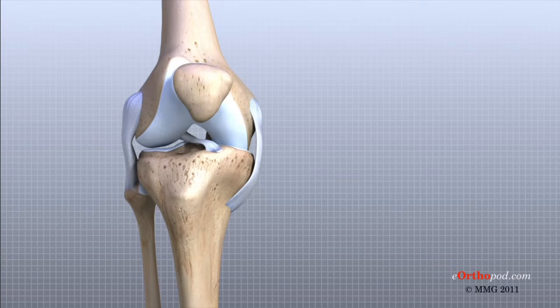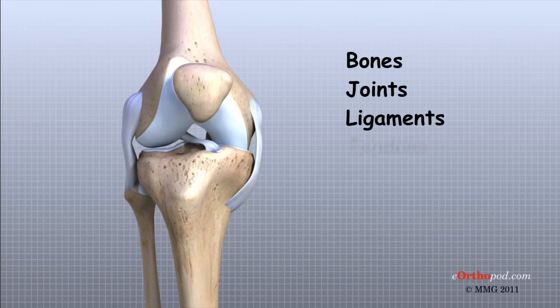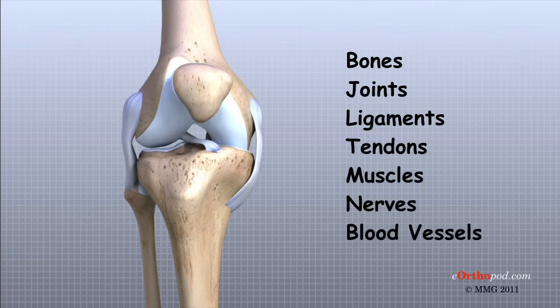The important structures of the knee can be divided into several categories. These include bones, joints, ligaments, tendons, muscles, nerves, and blood vessels.